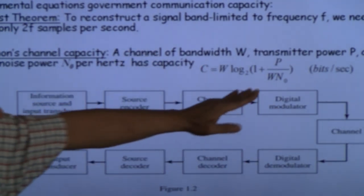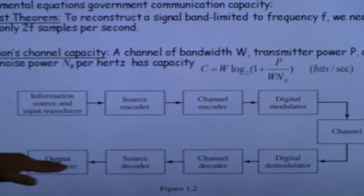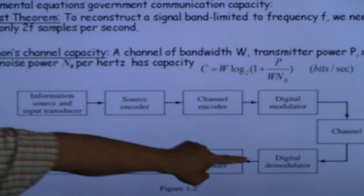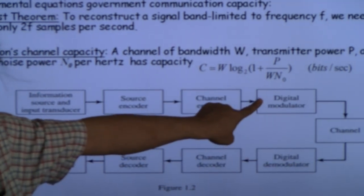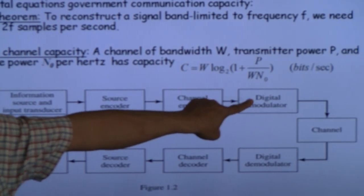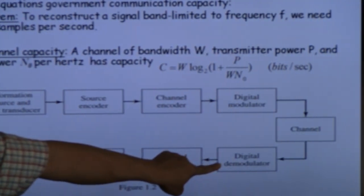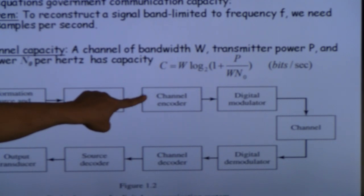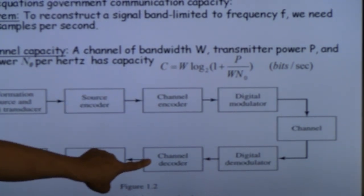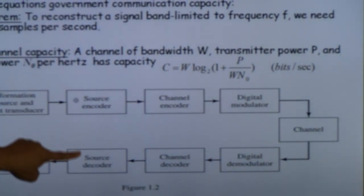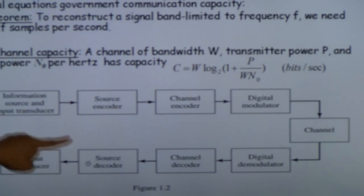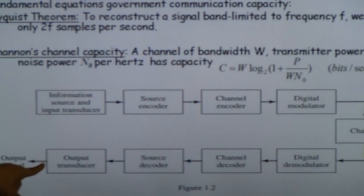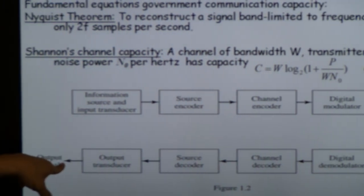On the receive end, which is at the bottom here, you have the reverse of every device on the transmit end. You have a digital demodulator, then a channel decoder where on the transmit side you had a channel encoder, then a source decoder where you had a source encoder, before you pass the signal onto the consumption side.